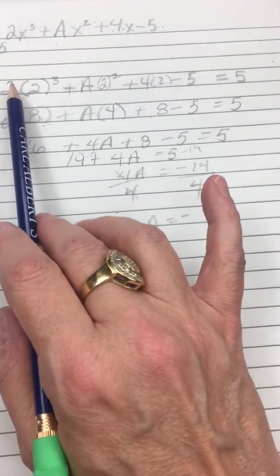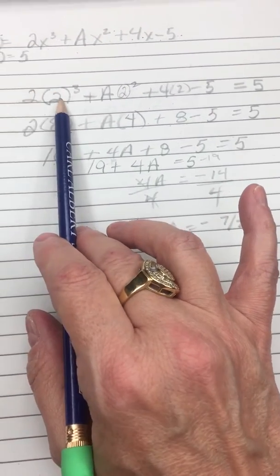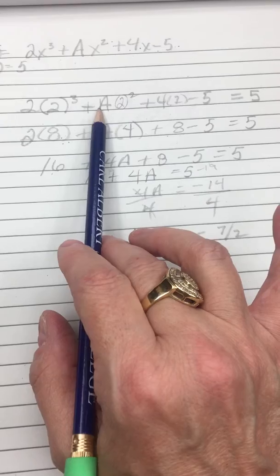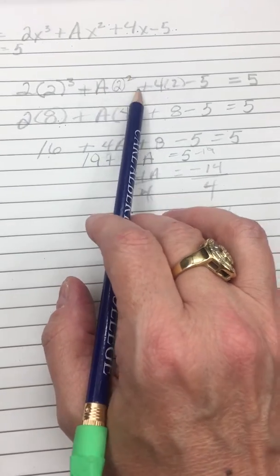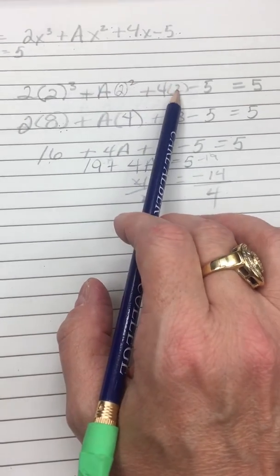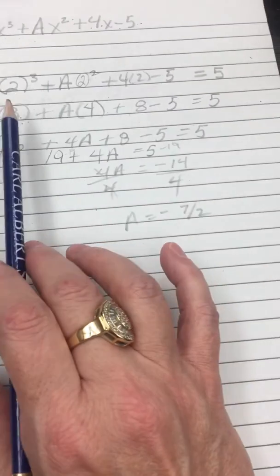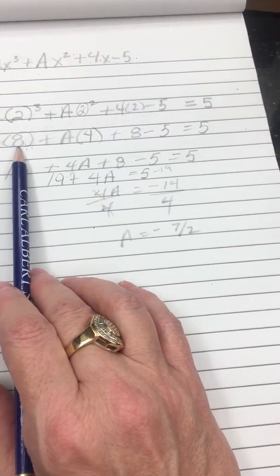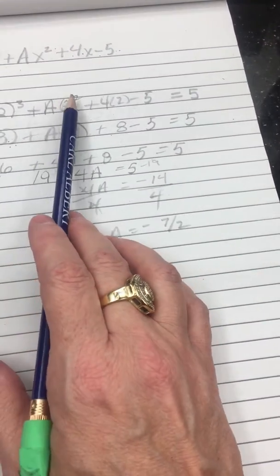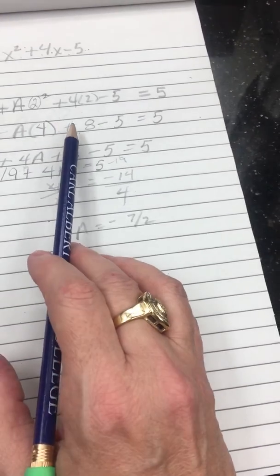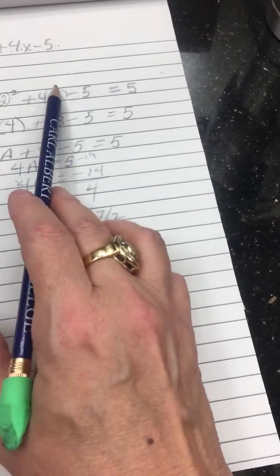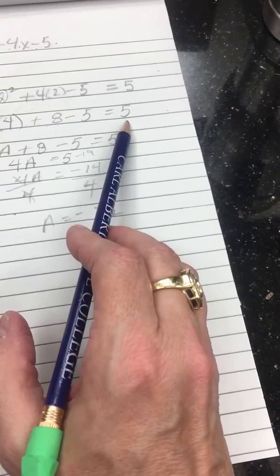So when we do that, we end up with 2 times 2 to the third plus A times 2 squared plus 4 times 2 minus 5 equals 5. So that's 2 times 8 plus 4 times A plus 8 minus 5 equals 5.